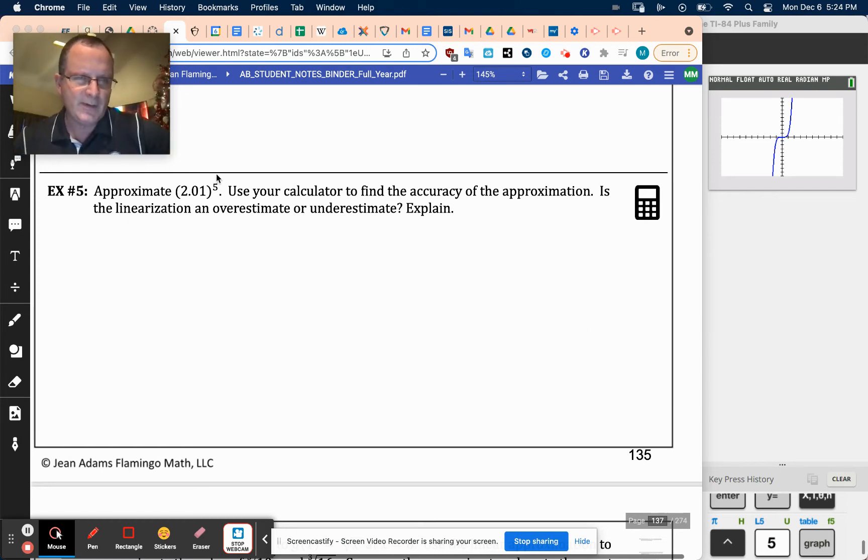So here's what we're going to do. We're going to use x to the 5th, and we're going to have it be around 2 to the 5th because 2.01 is very, very, very close. That just seems like a logical thing to do.